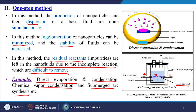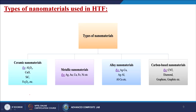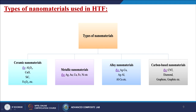Now let us discuss what kinds of nanomaterials can be added to the HTF. We can add ceramic nanomaterials like Al₂O₃, copper oxide, silicon carbide, and Fe₂O₃; metallic nanomaterials like silver, gold, copper, iron, and nickel; alloy nanomaterials like silver-copper, silver-aluminum, and aluminum-copper combinations; and carbon-based nanomaterials like carbon nanotubes, diamond (artificial), and graphene or graphite.